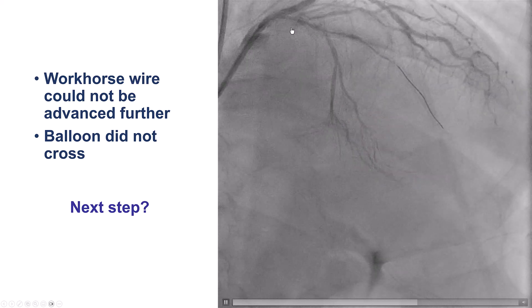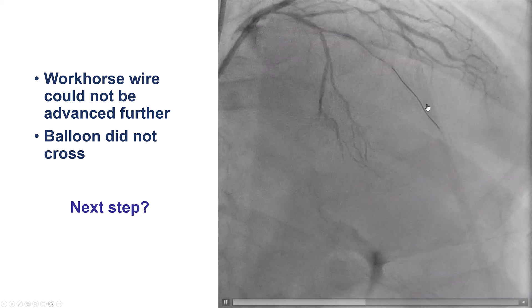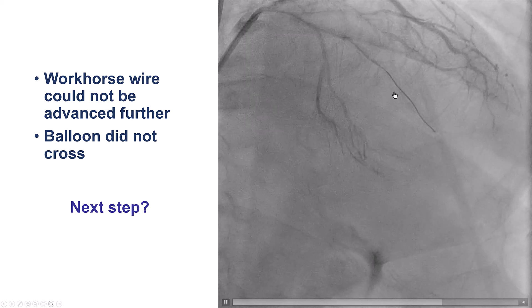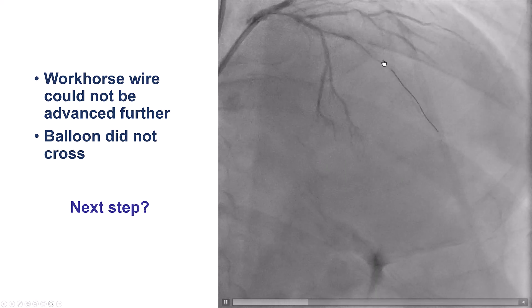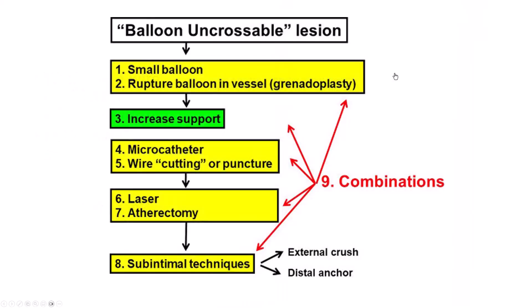We tried to advance a guide wire to the lesion. A workhorse wire would not go, and no balloons could advance. We do have an algorithm that starts with a small balloon, grenadoplasty, more support, microcatheters, and goes on to laser atherectomy and the subintimal techniques.